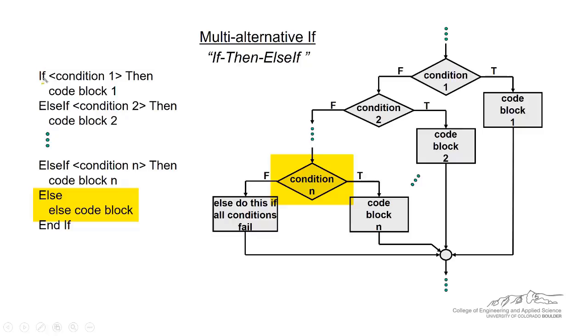The way it looks in VBA, we have the if-then. If that's true, then the thing that makes this different from the previous two if-then statements, the one-way and the two-way if-then statements, is the presence of this else-if. So this else-if condition here corresponds to this second condition, and so on.